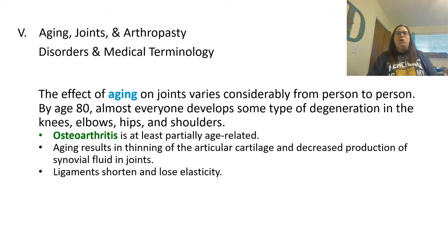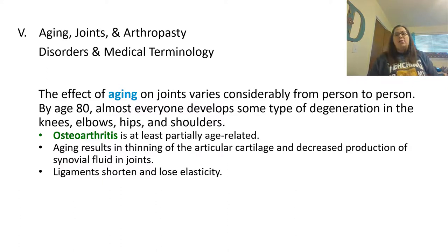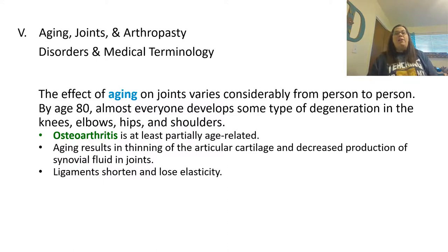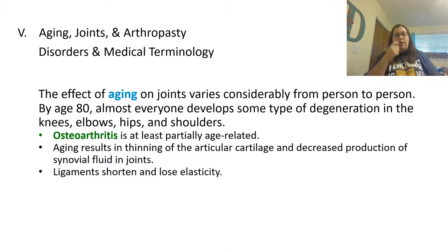Let's talk about aging joints. The effect of aging on joints varies considerably from person to person, but by the age of 80, almost everyone has developed some type of degeneration in their knees, elbows, hips, and shoulders, because we use those joints a lot. This is known as osteoarthritis, and it is at least partially age-related — though it could also be due to being very hard on your joints when you were younger. Aging also results in a thinning of the articular cartilage and a decrease in synovial fluid production. Ligaments also start to shorten and lose their elasticity as we age.